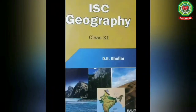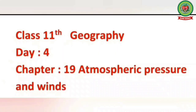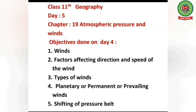Hello students, welcome to geography class. Today we will continue chapter 19: Atmospheric Pressure and Winds. The objectives done on Day 4 are: number 1, winds; number 2, factors affecting direction and speed of the wind; number 3, types of winds; number 4, planetary or permanent or prevailing winds; and number 5, shifting of pressure belts. Today we will study from page number 281 to page number 284.